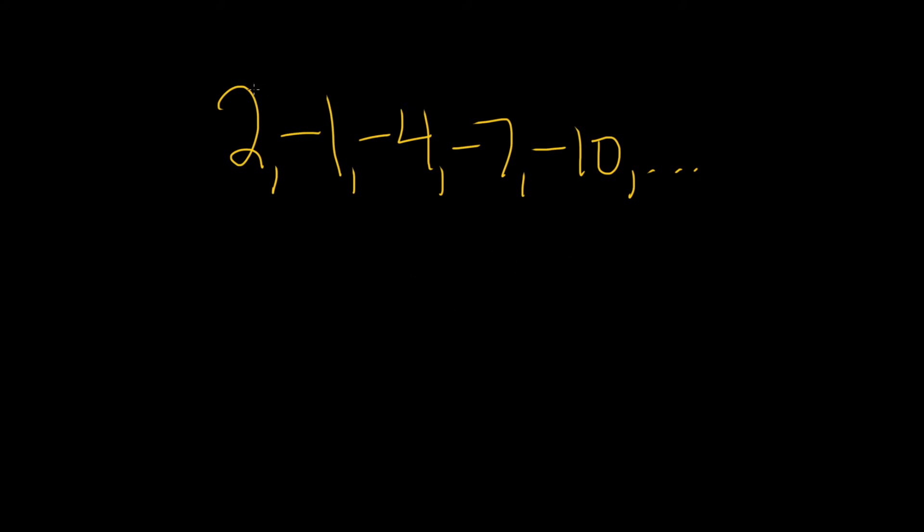So if you look at this, it looks like we're subtracting, but we're really adding negative 3 each time. 2 plus negative 3 is negative 1, plus negative 3 is negative 4, plus negative 3 is negative 7, etc. So this is called an arithmetic sequence.